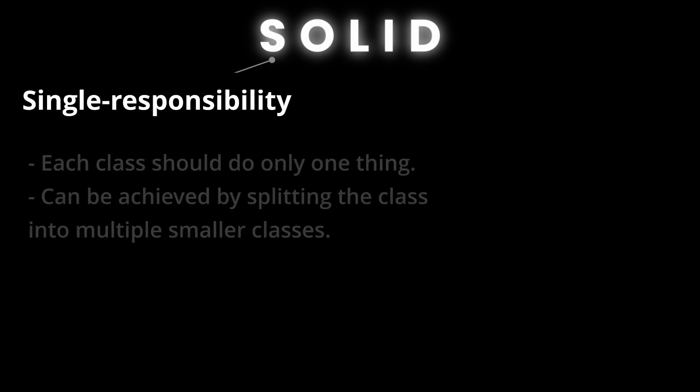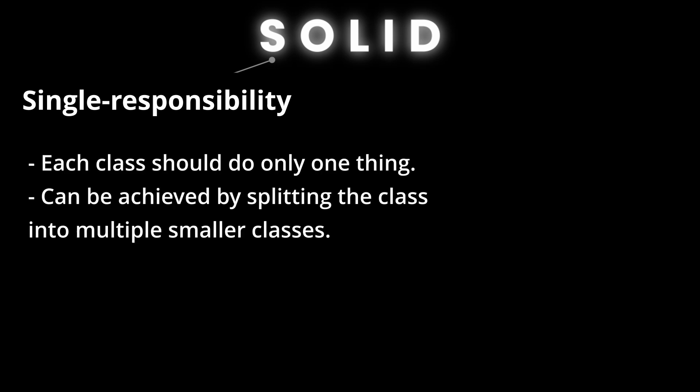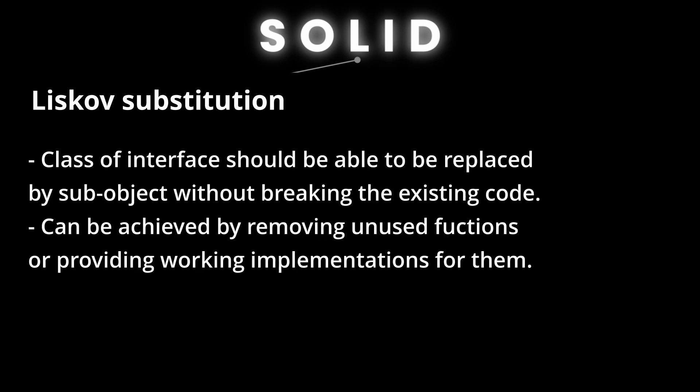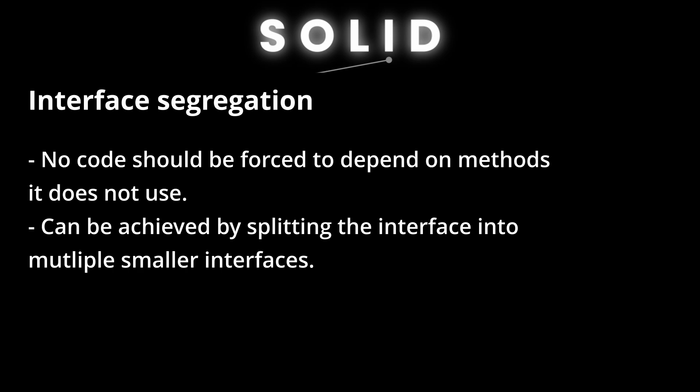Let's quickly recap all 5 principles. For S, the Single Responsibility Principle: each class should do only one thing, achieved by splitting into smaller classes. For O, the Open-Closed Principle: software should be open for extension but closed for modification, achieved by adding more variables and introducing interfaces. For L, the Liskov Substitution Principle: a class or interface should be replaceable by a sub-object without breaking existing code — make sure functions have proper implementations. For I, the Interface Segregation Principle: no code should be forced to depend on methods it does not use, solved by splitting interfaces into smaller ones. For D, the Dependency Inversion Principle: classes should depend on abstractions like interfaces or abstract classes, not on concrete implementations.